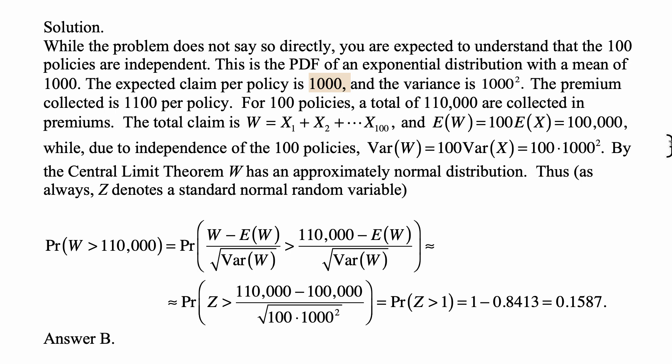The premium collected is 100 over the mean, so 100 over 1,000, that's 1,100. So that's the premium collected. And for 100 policies, a total of 110,000 are collected in premiums. The total claims is the random variable W equal to the sum of the Xs.